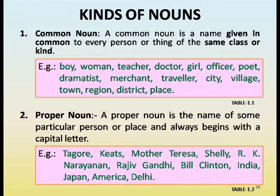More common nouns: city, village, town, region, district, place. Proper noun: a proper noun is the name of some particular person or place and always begins with a capital letter. Examples: Tagore, Keats, Mother Teresa, Shelley, R.K. Narayan, Rajiv Gandhi, Bill Clinton, India, Japan, America, Delhi.